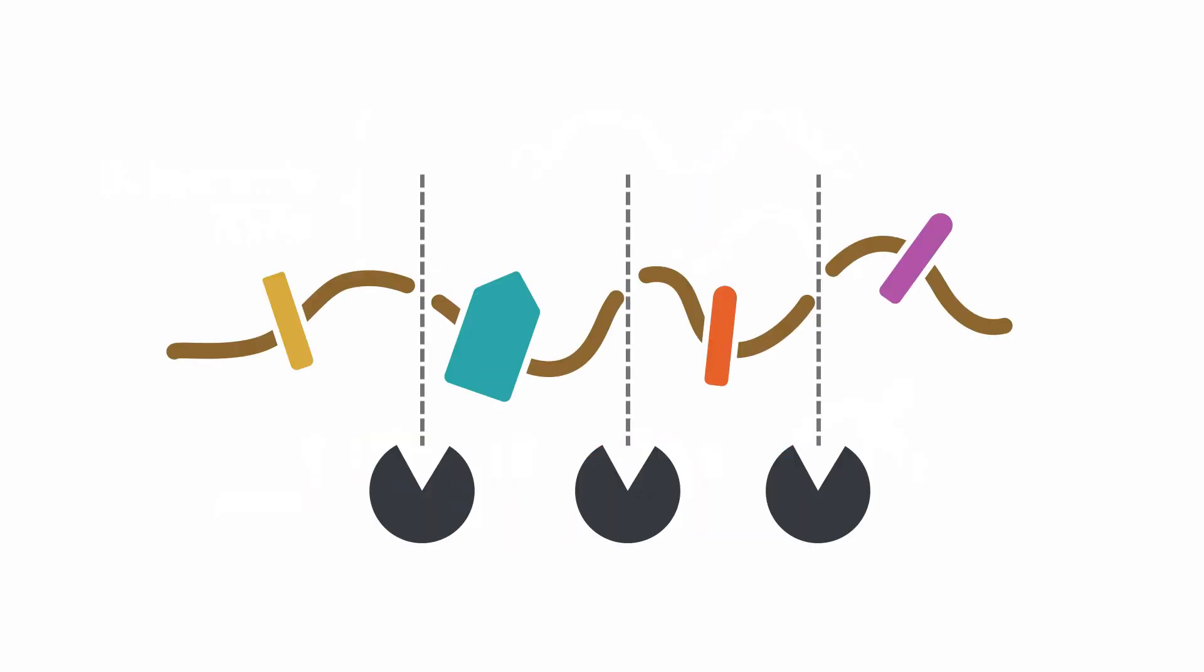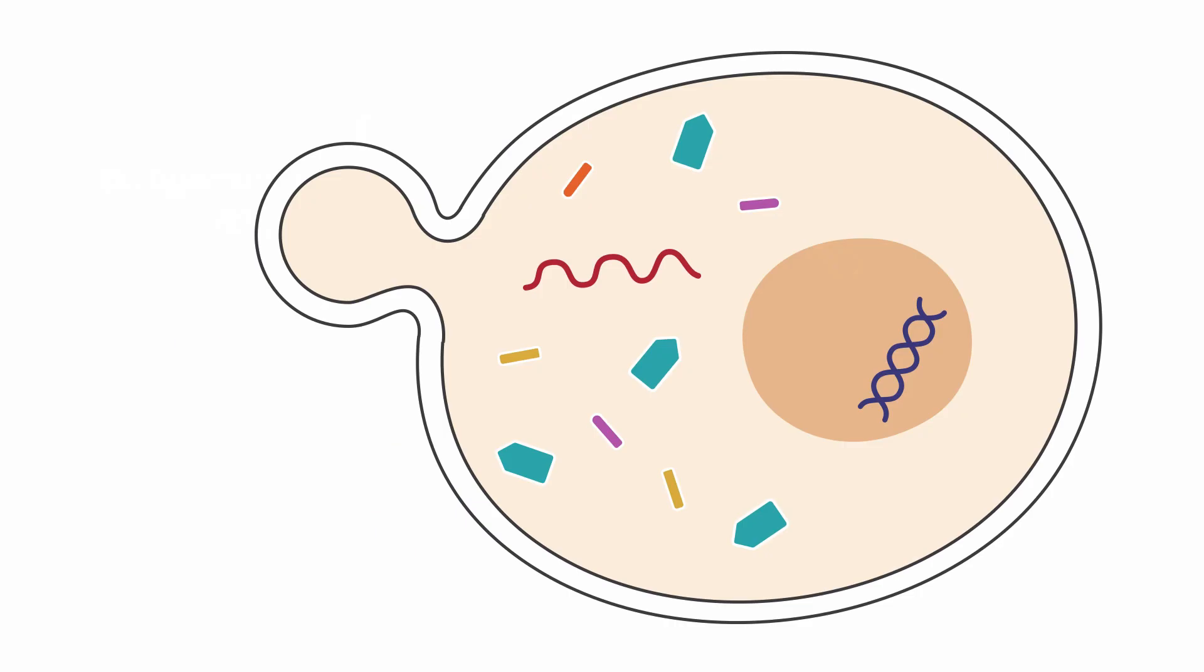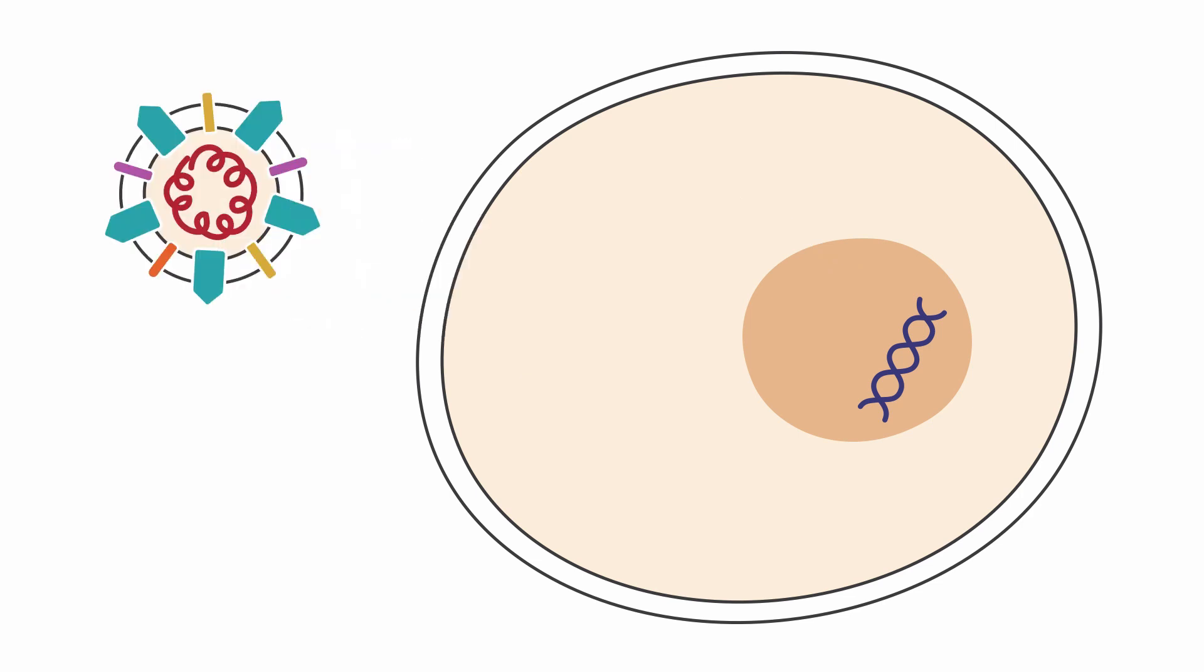Specific enzymes known as proteases then come along and cut the proteins into individual structural proteins. Then the replicated viral RNA and proteins can be packaged up into a new virus, which is released from the cell and ready to infect another cell or another person.